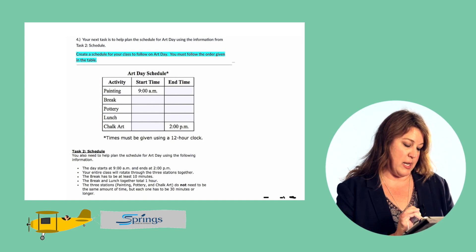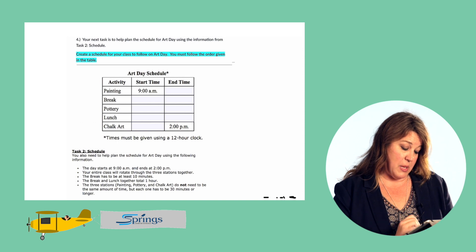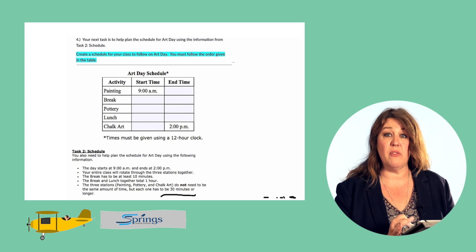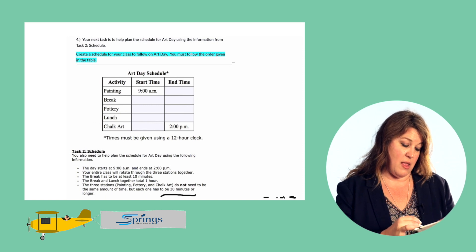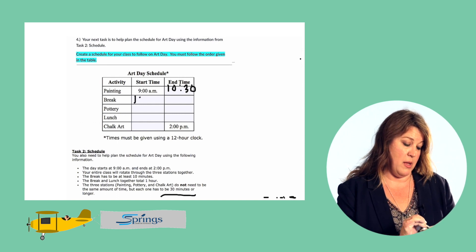So we have our start and end time, nine and two. The first activity is painting. It doesn't tell me how long it has to be, but each station has to be thirty minutes or longer. So let's say they go to painting for an hour and a half. If they start at nine, that means they would end at ten thirty. They're going to rotate through all of the stations together, so if they end painting at ten thirty, they're going to start the next activity — their break — right afterwards at ten thirty.